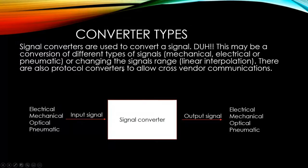Different converter types basically take an input signal — whether it's electronic, mechanical, optical, or pneumatic — apply some type of function to it in a converting module, and then give an output signal that matches what we need. We can bring in electrical and put out pneumatic, or bring in pneumatic and put out electrical. There are just about as many combinations as there are options.